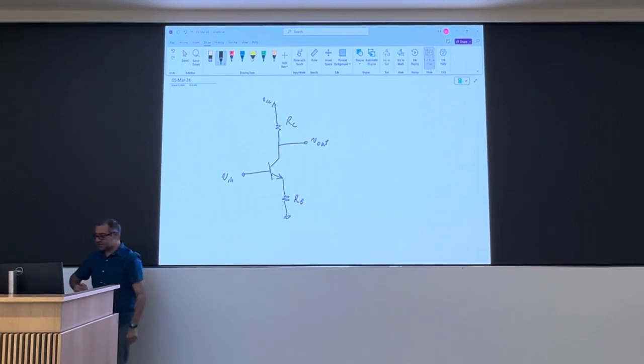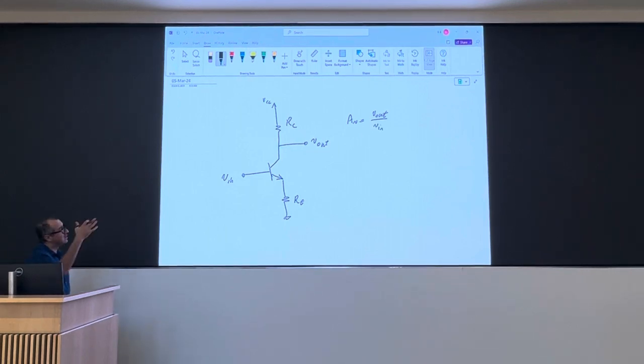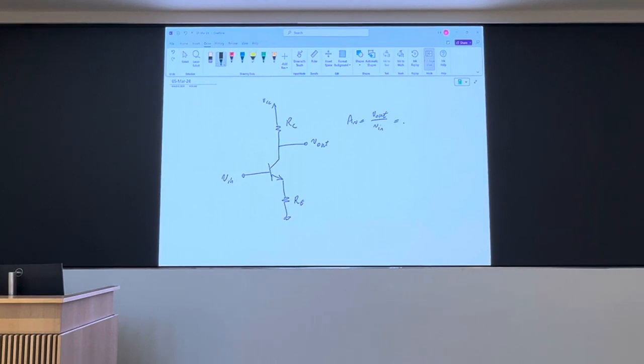We analyzed this circuit. We saw that the gain, voltage gain, which is the ratio of the amplitude. Right? The amplitude of the output to the input. There's a phase difference of 180 degrees.